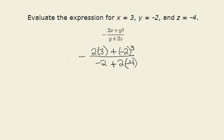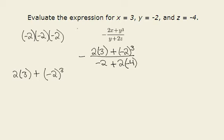In our numerator, we have 2 times 3, plus negative 2 cubed. We'll do the exponents first. Negative 2 cubed is the same as negative 2 times negative 2 times negative 2. Negative 2 times negative 2 gives us a positive 4, times negative 2, gives us negative 8. And then 2 times 3 gives us 6. So this becomes 6 plus negative 8. 6 plus negative 8 gives us negative 2. So that's our new numerator.